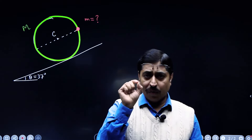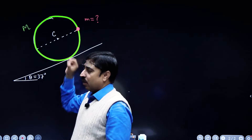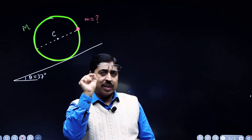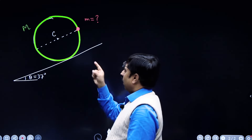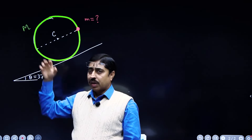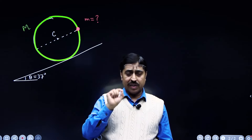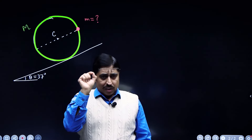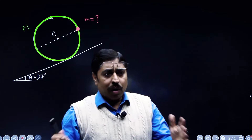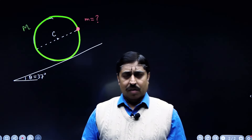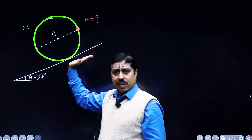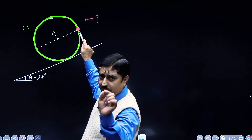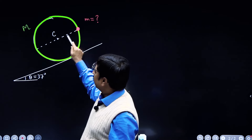This green colored object is a uniform ring, and this red colored object is a particle which is attached to and sticking to the ring. The green colored object has mass capital M, which is given. The ring is uniform and the red colored particle sticking to the circumference of the ring has an unknown mass that has to be calculated. It was found that when this ring is kept on the inclined plane such that the red particle lies on the diameter which is parallel to the incline.